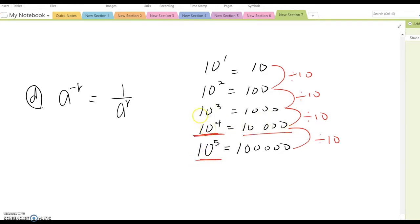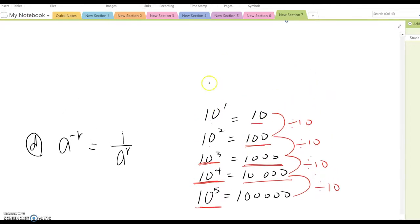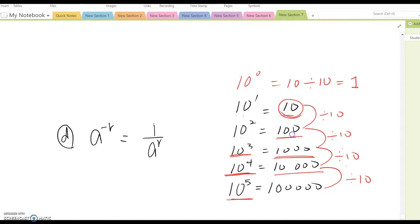The same procedure. 10 cubed means 10 to the 4th divided by 10, so become 1,000. 10 squared, 1,000 divided by 10, so 100. 10 to the 1st power divided by 10, so become 10 here. Which means, 10 to the 0th power means 10 divided by 10, so equal to 1. Go a little further.